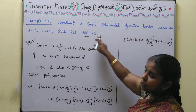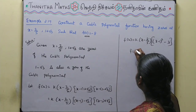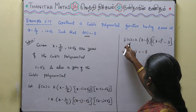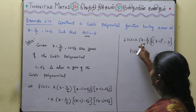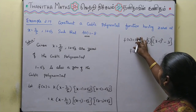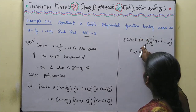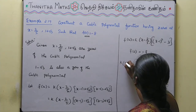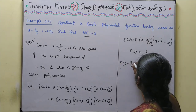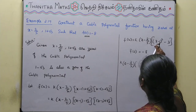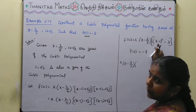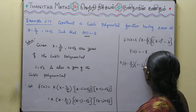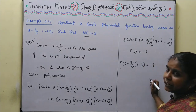Given f(0) = -8. Substituting x = 0: f(0) = k · (0 - 2/5) · [(0 - 1)² - 3] = k · (-2/5) · (1 - 3) = k · (-2/5) · (-2).